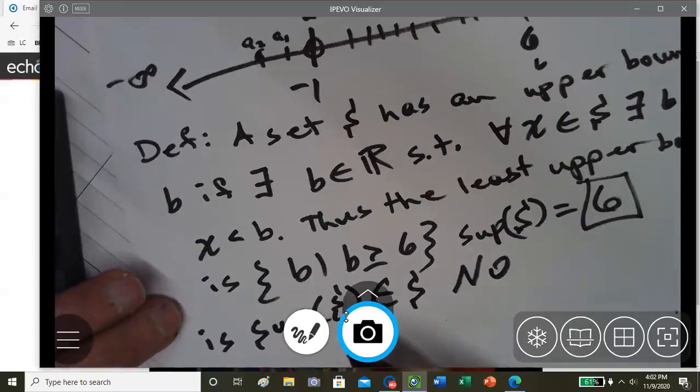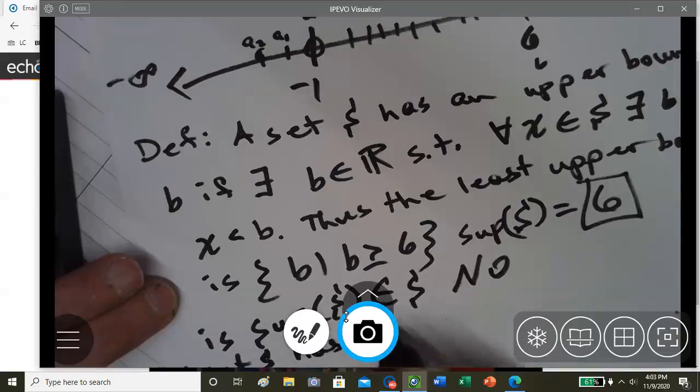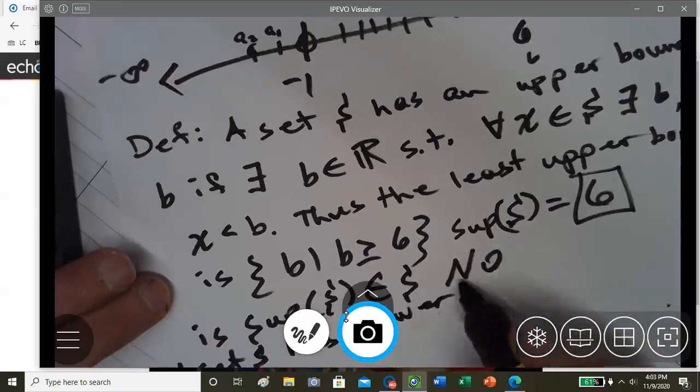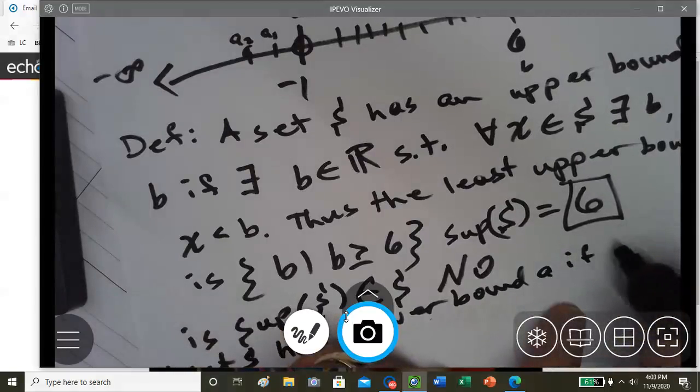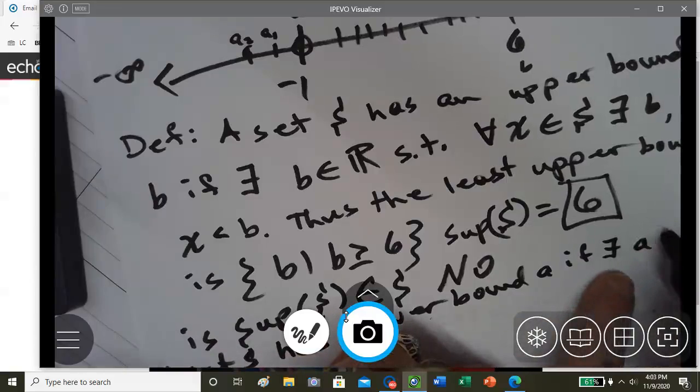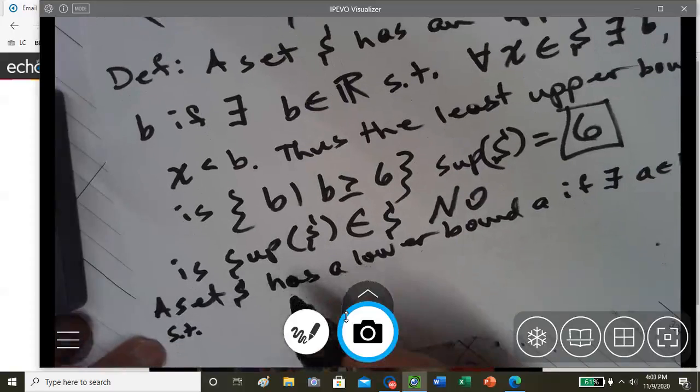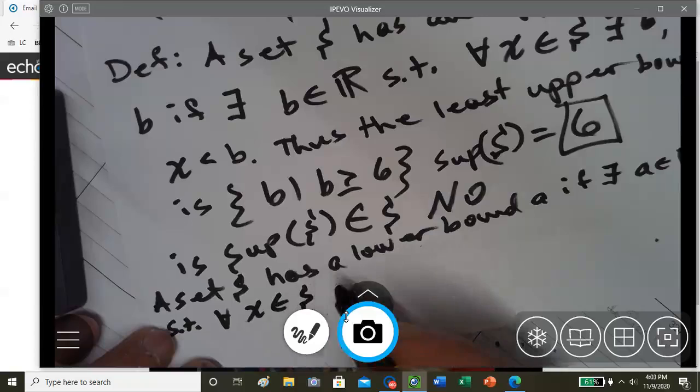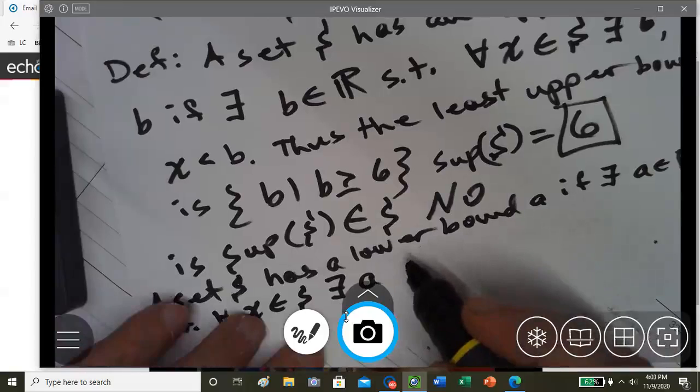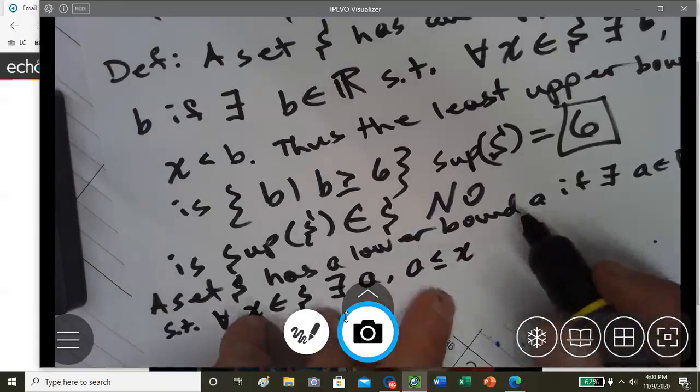Okay, so the greatest lower bound would be a set S has a lower bound A if there exists A is an element of all real numbers such that for all x element in set S, there exists an A where A is less than or equal to x. Thus...